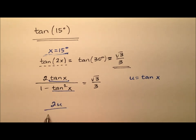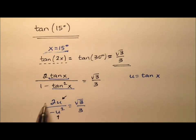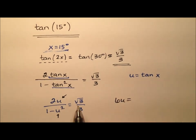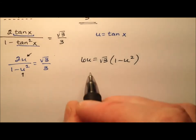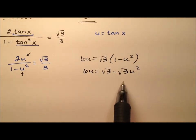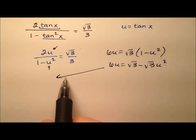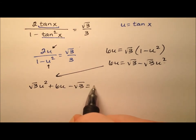I'm going to say 2u over 1 minus u squared equals the square root of 3 over 3. So this means when we actually solve for u here, what we're going to have is the value of the tangent of 15 degrees. It looks like here I have a nice proportion, so let's go ahead and do cross products. So 2u times 3 gives 6u equals the square root of 3 times 1 minus u squared. Distributing through: the square root of 3 minus the square root of 3u squared. So we have a nice quadratic — u squared, u, and a constant. Shuffling all terms to the left side: the square root of 3u squared plus 6u minus the square root of 3 equals 0.